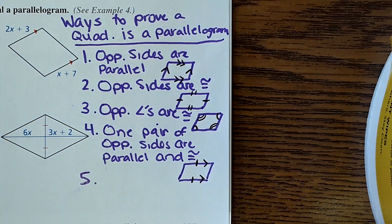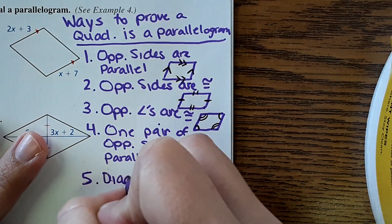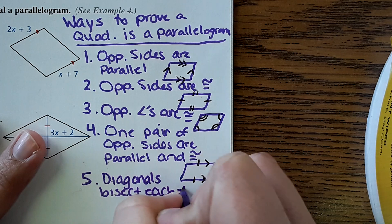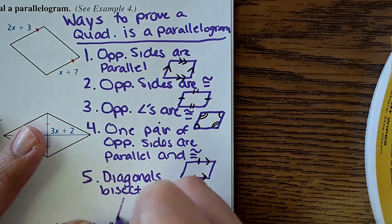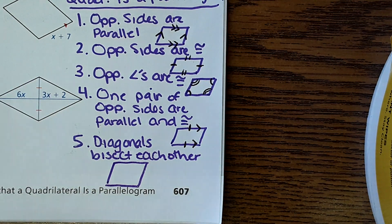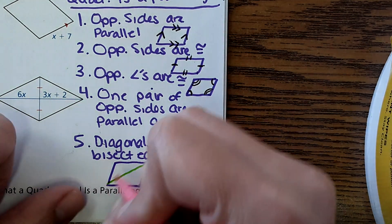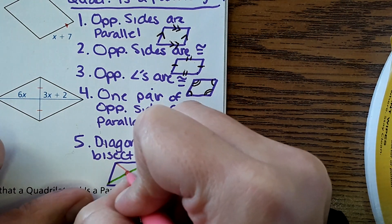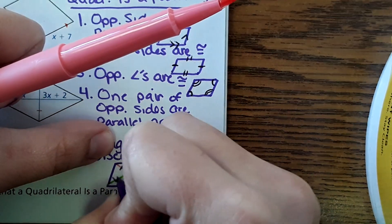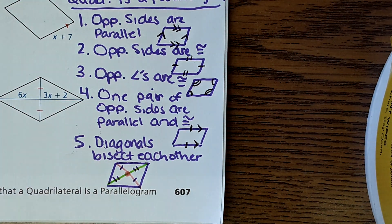Number five, last but not least: diagonals bisect each other. Here's our parallelogram with its diagonals. Those diagonals meet at the midpoint of each line, so this segment would be the same length as this one, and this segment would be the same length as this one. If those conditions are met, then you know you have a parallelogram.